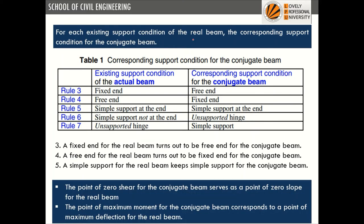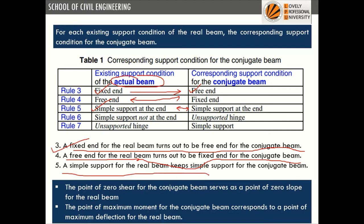For each existing support condition of the real beam, there is a corresponding support condition for the conjugate beam. A fixed end becomes free, and a free end becomes fixed. Simply supported remains simply supported. In the case of a cantilever, we change the ends, but a simply supported beam remains simply supported.